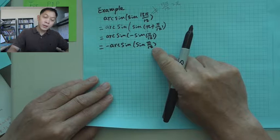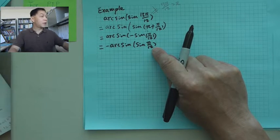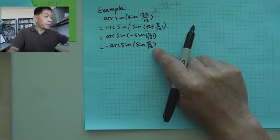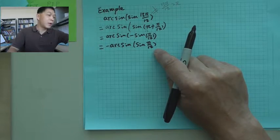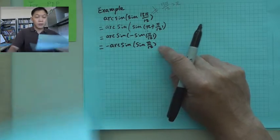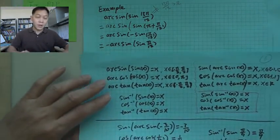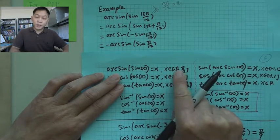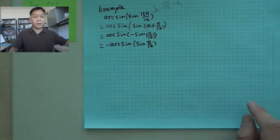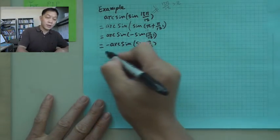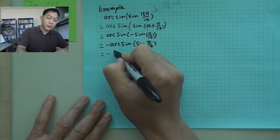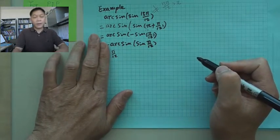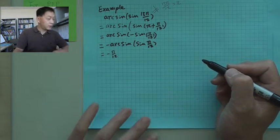And now, you can use the identity, because pi over 12 is in from negative pi over 2 to the positive pi over 2. Arcsine sine, this x has to be inside. So in this case, what you get will be negative pi over 12, that's the final answer.